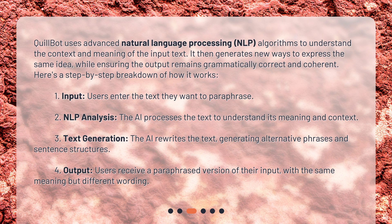Step 3: Text generation — the AI rewrites the text, generating alternative phrases and sentence structures. Step 4: Output — users receive a paraphrased version of their input, with the same meaning but different wording.